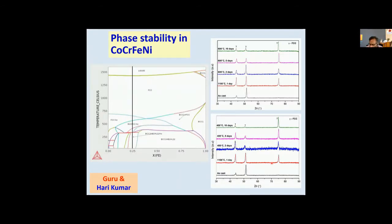The next question is: can I make a phase diagram for a multi-component system, and by looking at it, can I know how the phases are at various temperatures? This is also a phase diagram — the only difference is it is a four-component phase diagram in which three components are on the left side and I am increasing the fourth component, iron. At the equiatomic composition — iron 25, cobalt 25, chromium 25, nickel 25 — I draw a vertical line as a function of temperature. Above the solidus curve, it is liquid; below that, it forms FCC. But what is interesting is that if you go below about 700 degrees, it gives you other phases also.